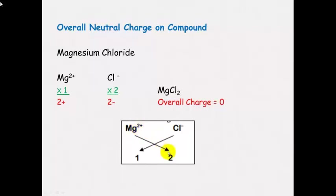The cross method is an easy way of establishing what charges you need. Look at the valency on the opposite ion — that will tell you how many you need. For magnesium and chloride: there is a 1 on the chloride, so you need 1 magnesium; there is a 2 plus on the magnesium, so you need 2 chloride ions.